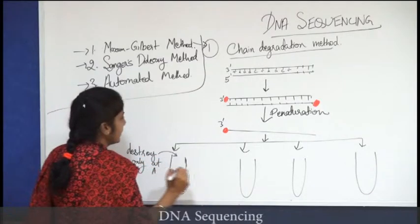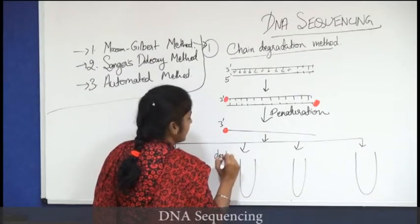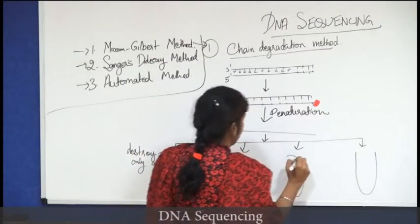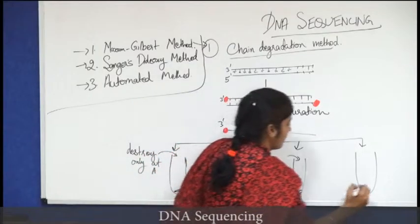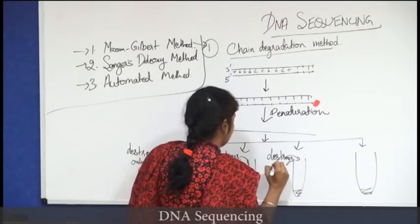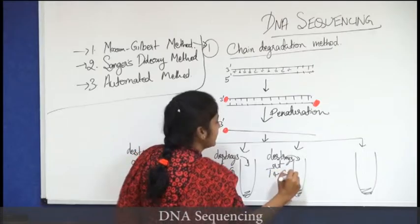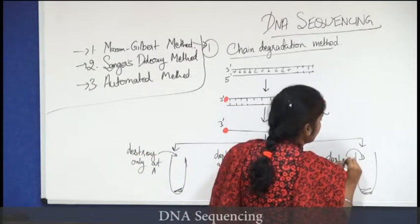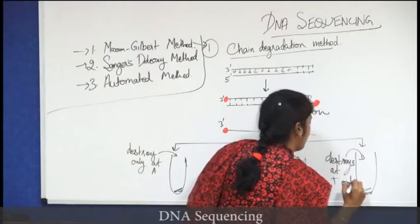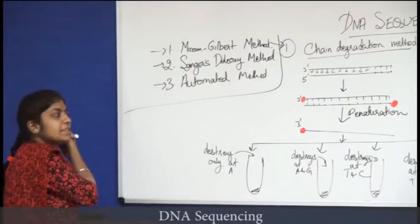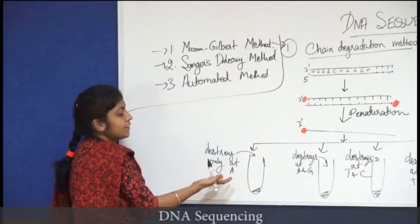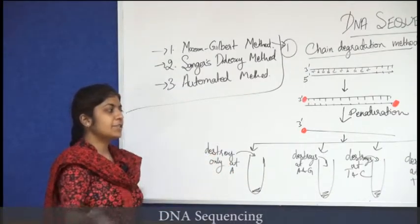The chemicals in each tube degrade the DNA at specific bases: tube one destroys only at A, tube two destroys at A and G, tube three destroys at T and C, and tube four destroys at T only. Each tube contains the denatured DNA labeled at its 3 prime end, along with chemicals capable of degrading the DNA chain at a specific base.